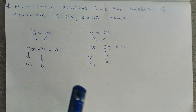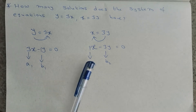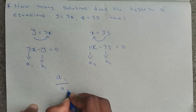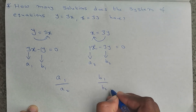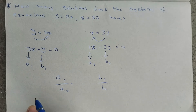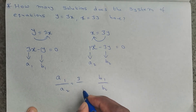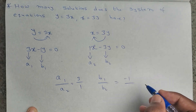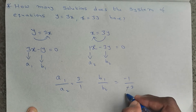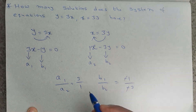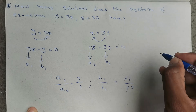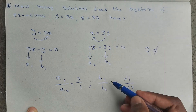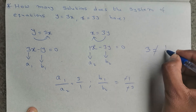Now let us compare the ratio of a1 by a2 and b1 by b2. a1 by a2 is 3 divided by 1, which equals 3. b1 by b2 is minus 1 divided by minus 3 — the negatives cancel — giving 1 by 3.